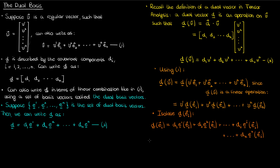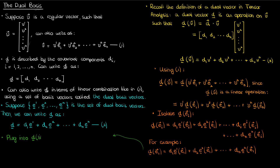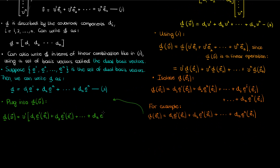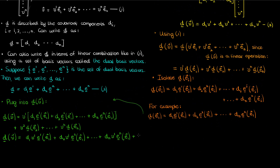The d sub 1, 2, 3, etc. components act as scalars multiplying the corresponding dual basis vectors operating on the regular basis vector e sub i. For example, if I'm operating my dual vector d on e sub 1, the first regular basis vector, this is what I'll get. Plugging this back into the equation for the dual vector operating on v and expanding out the term in brackets gives us equation 4.